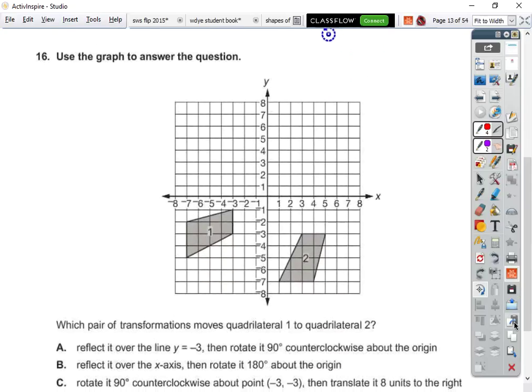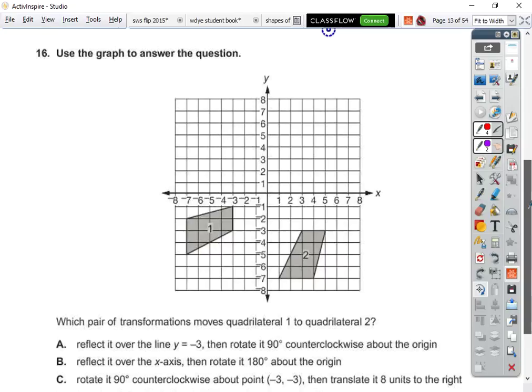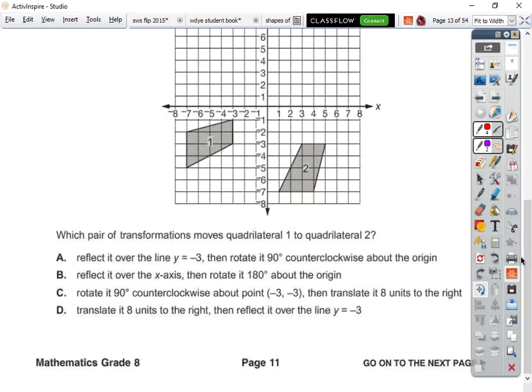16. Which pair of transformations moves quadrilateral one to quadrilateral two? All right. So I've noticed that first that it is oriented in a different direction. So that means there's some sort of reflection that had to happen. That is far more likely than a rotation. So I know that this rotation is probably not a good idea. Likewise, rotating 180 degrees would put it way over here. Or reflecting over the x-axis would put it here. And then rotating 180 degrees would bring it here. So we know that can't be right either.